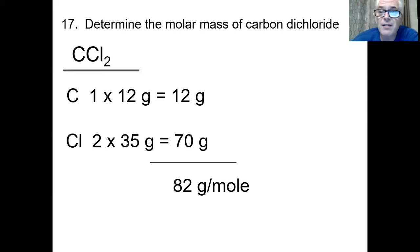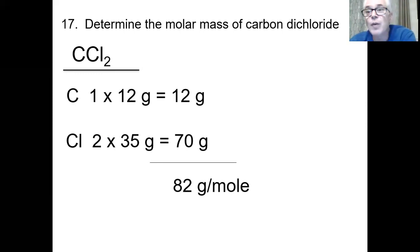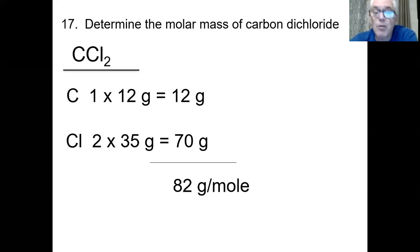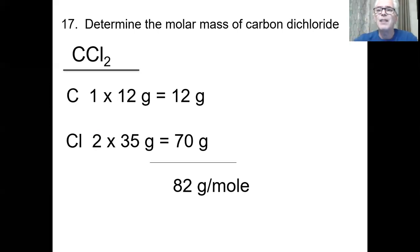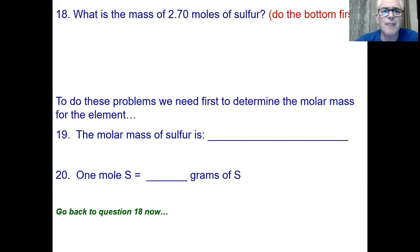If you had 82 grams of carbon dichloride, you would have one mole. If you had one mole of carbon dichloride on a scale, it would read 82 grams. Moles are right in the middle — connecting how many particles you have to how many grams, for atoms and for molecules.